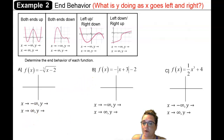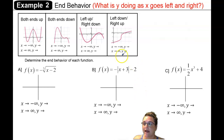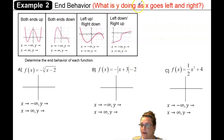In example two, we're looking at the end behavior of these functions. End behavior is asking what is the y doing as the x goes off to the left end of the graph and to the right end of the graph.